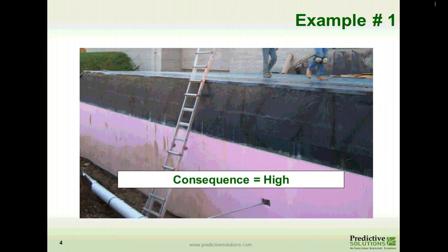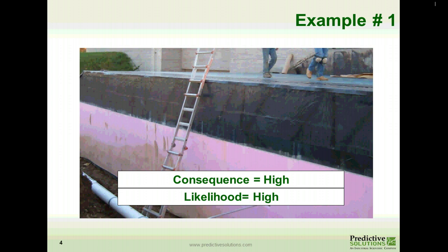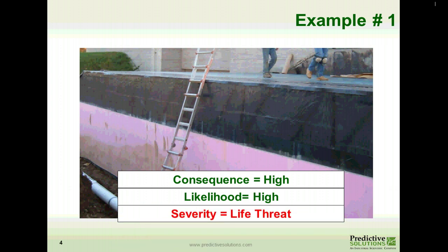Then we make a determination of likelihood — how likely is it for one of those workers to fall? The likelihood is high based on the environmental conditions: no protections available, no guardrails, no fall protection system, not tied off. So high consequence and high likelihood results in a severity of life threat. Even if you as the observer chose a low likelihood, high consequence with low likelihood is still a severity of high.